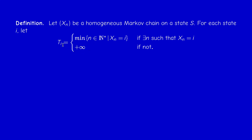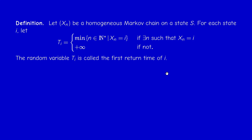T_i is a random variable taking values in ℕ* union {infinity}. We call this random variable the time of first return to state i — le temps de premier retour à l'état i.